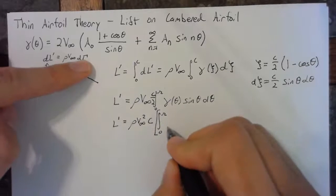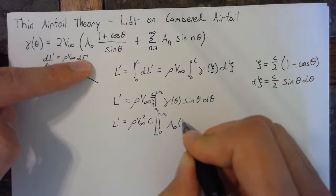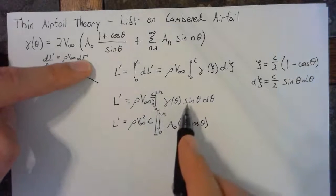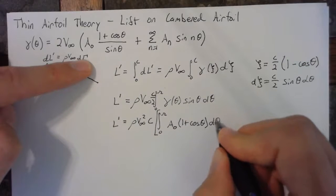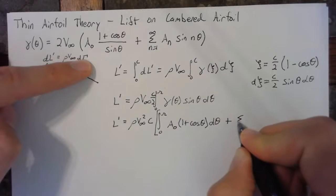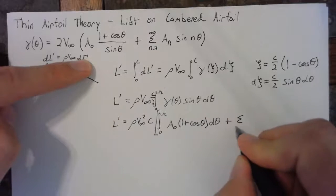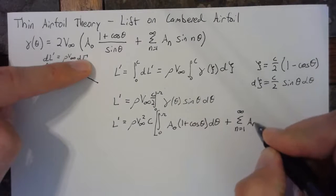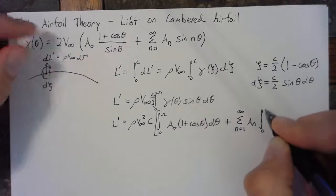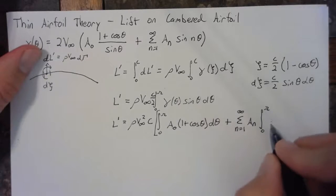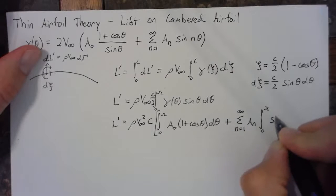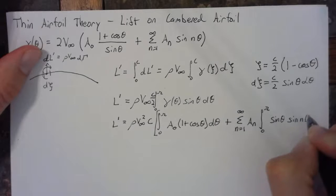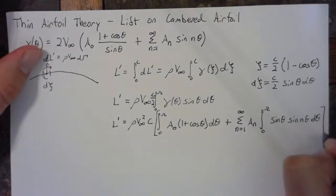Now we'll plug in our first term. Let's go ahead and put some brackets here. Plug in our first term, which is a0 times 1 plus cosine theta, and these sine thetas will cancel out, so we just need a d theta. And then we'll have our infinite sum, n equals 1 to infinity. We'll bring this an term outside of the integral, and then integrate from 0 to pi times sine of theta times sine of n theta d theta.